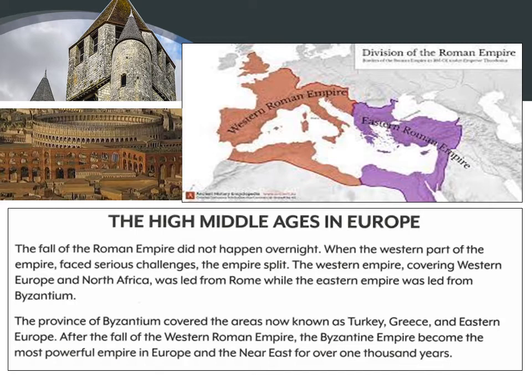Byzantine covered the areas now known as Turkey, Greece, and Eastern Europe. After the fall of the western Roman Empire, the Byzantine Empire became more powerful and became the most powerful empire in Europe and the Near East for nearly 1,000 years.